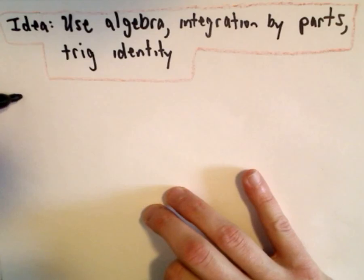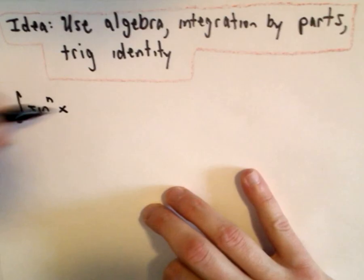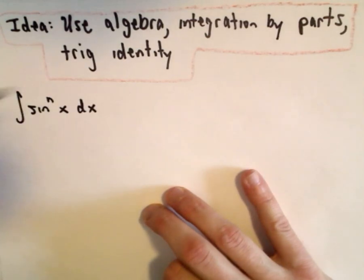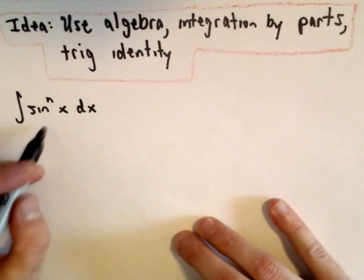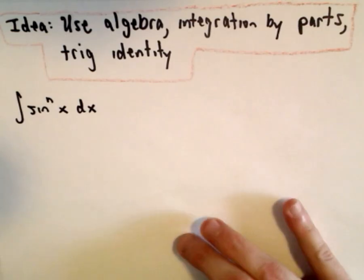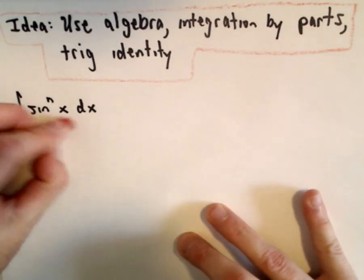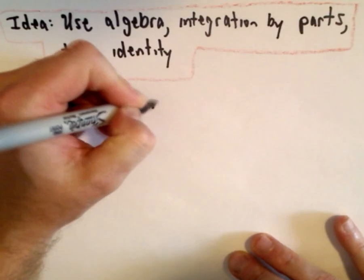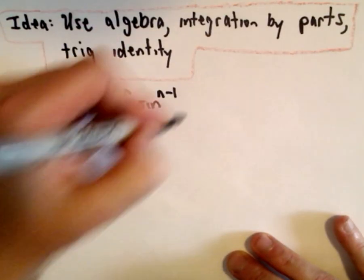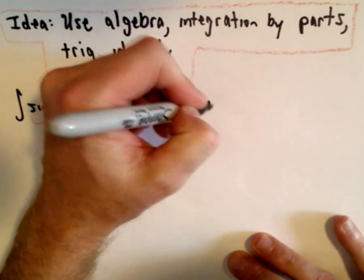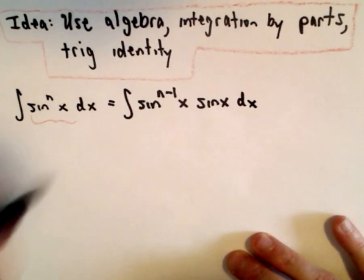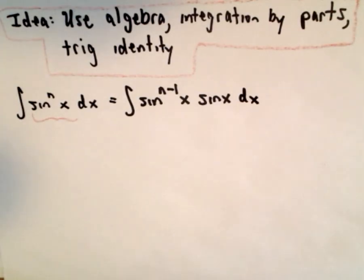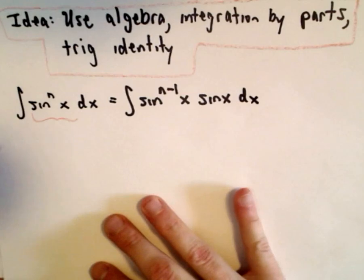Let's start off by rewriting our integral of sine raised to the power of n of x dx. We're going to break this up — I'm going to break sine^n(x) up as sine raised to the power of (n minus 1) of x multiplied by sine x. If you multiply these back together you would have sine raised to the power of n. Now I'm going to use integration by parts.